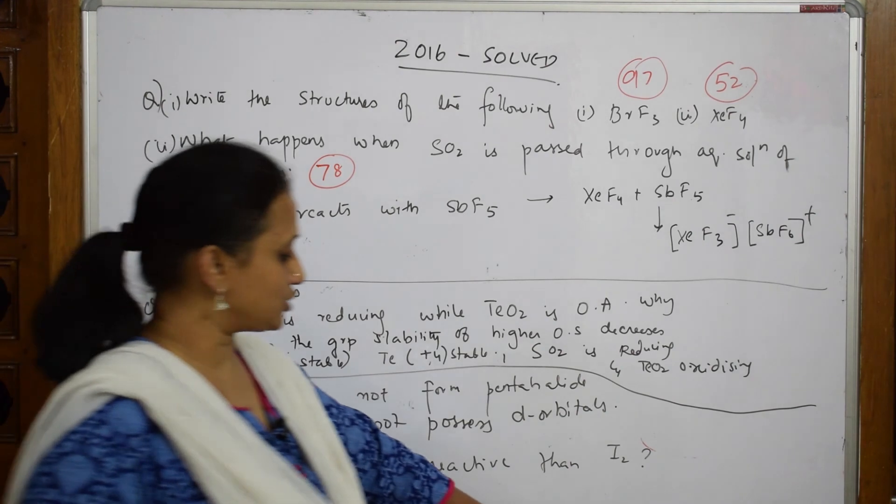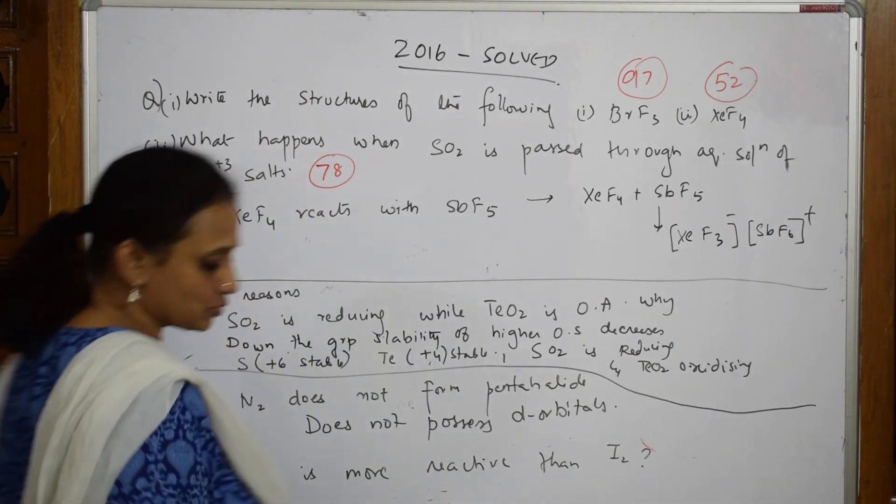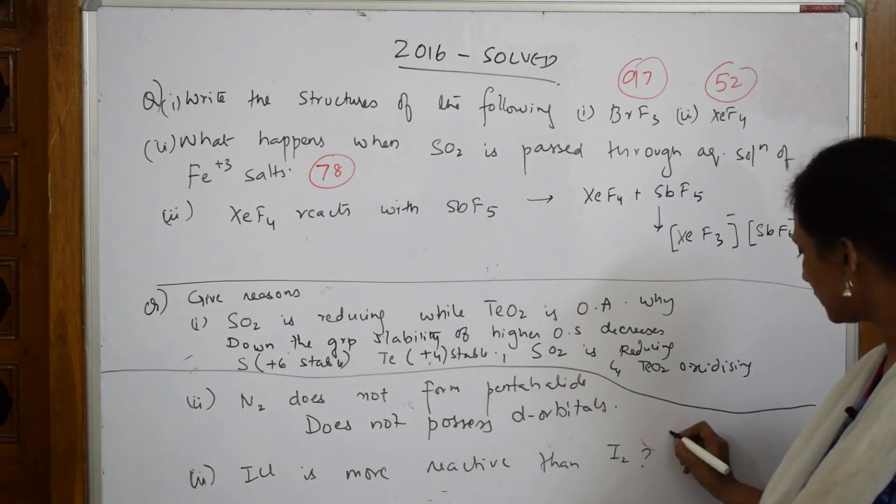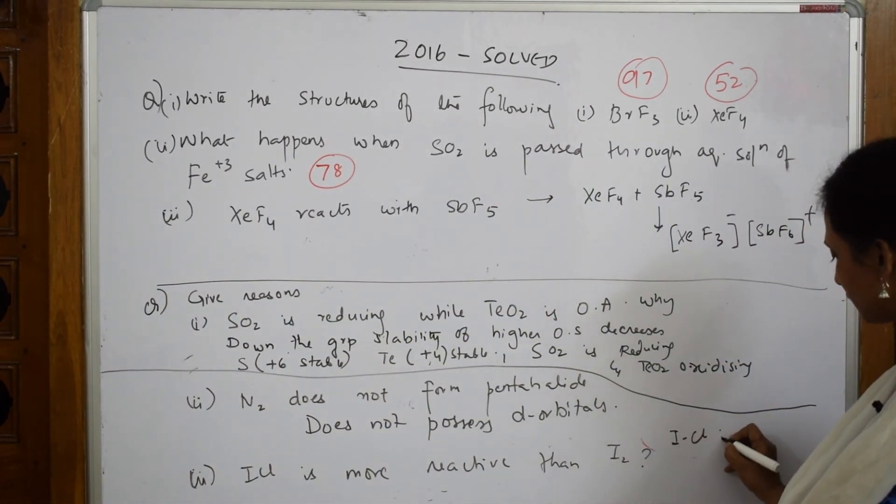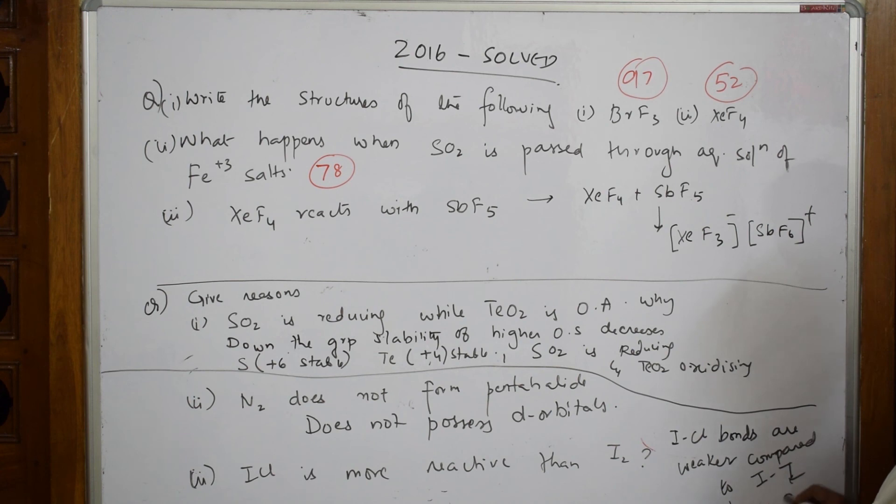ICl is more reactive than I2. Why is this more reactive? When I have to see the bond between these two—ICl bond and I-I bond—ICl bonds are weaker compared to I-I bond. When the bond is weaker, automatically they are reactive.